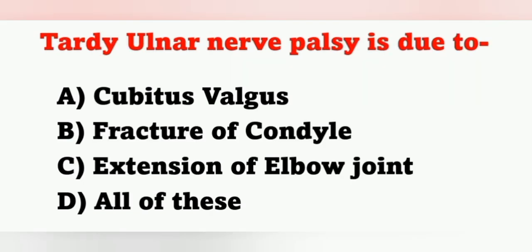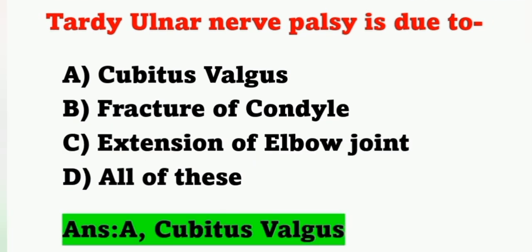Next question: Tardy ulnar nerve palsy is due to — options: option A, cubitus valgus; option B, fracture of condyle; option C, extension of elbow joint; option D, all of these. Tardy ulnar nerve palsy is associated with cubitus valgus. Option A is the correct answer.